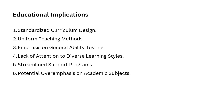Point five: streamlined support programs. Support programs for struggling students may focus solely on reinforcing general cognitive skills rather than addressing specific learning challenges. This might result in remedial programs that emphasize memory drills, problem-solving tasks, or logical reasoning exercises, with less attention given to alternative strategies that could help students thrive. Point number six: potential overemphasis on academic subjects. The focus on general intelligence may lead schools to prioritize traditional subjects like math, science, and language as they are seen as indicators of cognitive ability. Non-academic areas like arts, sports, or vocational skills might receive less attention, reducing opportunities for students to explore different areas of talent.